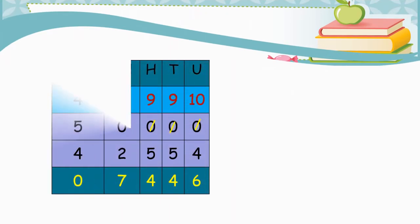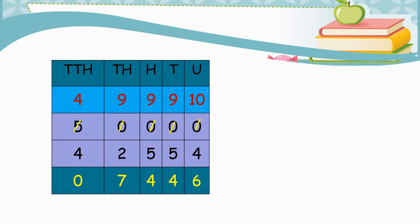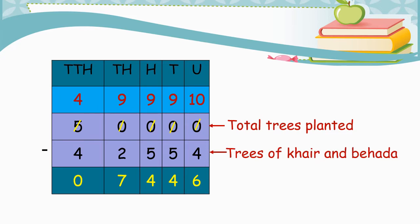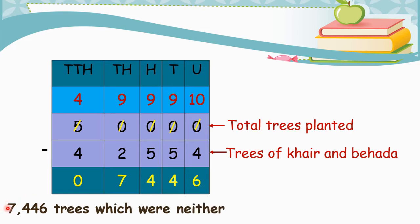We have 50,000 as the total number of trees planted by the forest department and 42,554 as the total number of Khe and Beda trees. Let us subtract the total number of Khe and Beda trees from the total trees planted by the forest department. We get 7,446 trees that were neither of Khe nor of Beda.